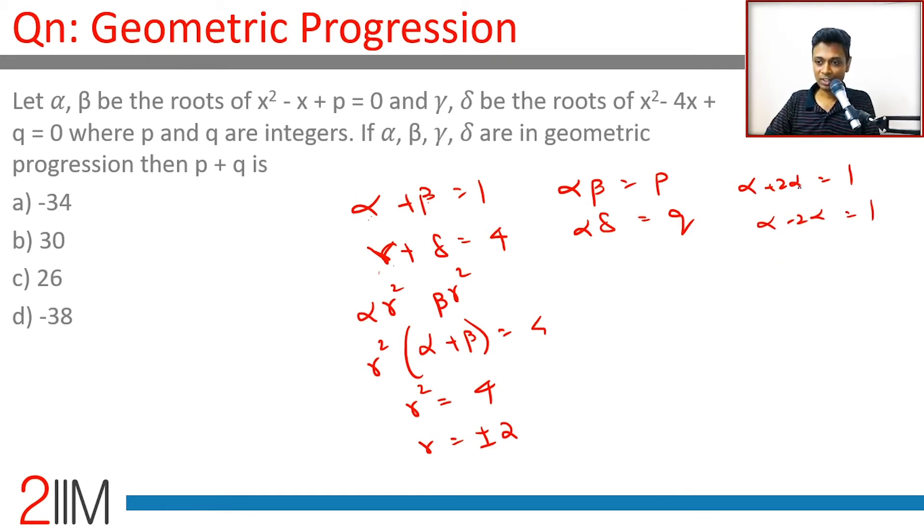So alpha plus 2 alpha is 1, that means alpha is 1 by 3 and beta is 2 by 3, or alpha is minus 1, beta is 2. So two possibilities.